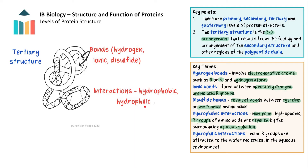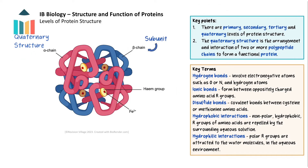Hydrophilic interactions are when the polar or charged R groups are attracted to the water molecules in the aqueous environment. The quaternary structure refers to the arrangement and interaction of two or more polypeptide chains to form a functional, biologically active protein complex. The polypeptide chains, also known as subunits, interact with each other through hydrogen bonds, ionic bonds, hydrophobic and hydrophilic interactions, and disulfide bonds. These interactions help stabilise the overall quaternary structure and maintain the overall shape of the protein complex.